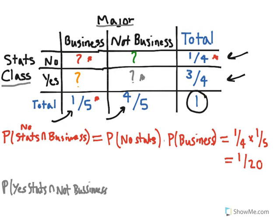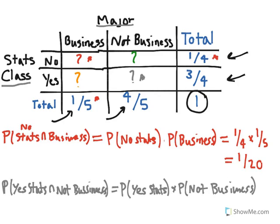That equals multiplying the probabilities of those events separately: the probability that they have taken stats before times the probability that they're not a business major. This gives us 3/4 times 4/5. Notice the fours will cancel out—one's on top, one's on bottom—and we'll be left with 3/5.